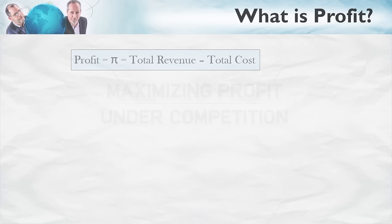So what is profit? Profit is total revenue minus total cost. Total revenue is just price times the quantity sold.